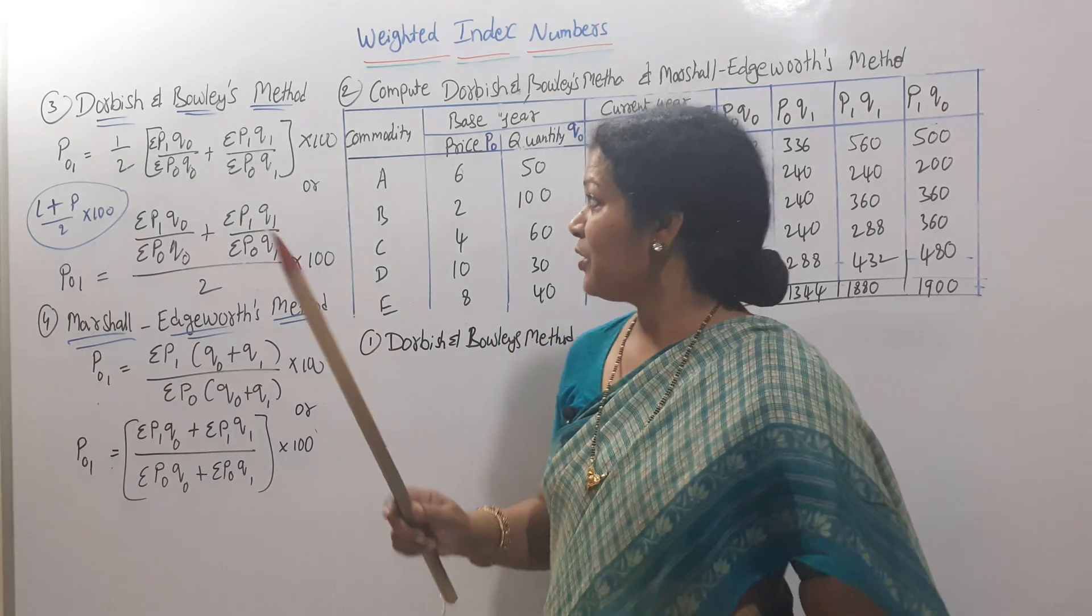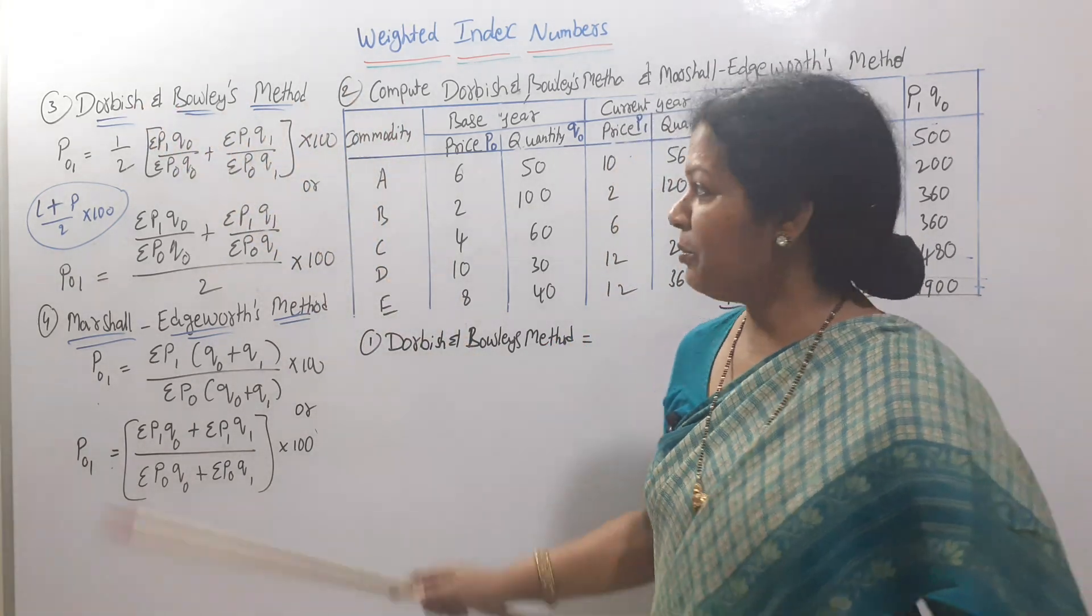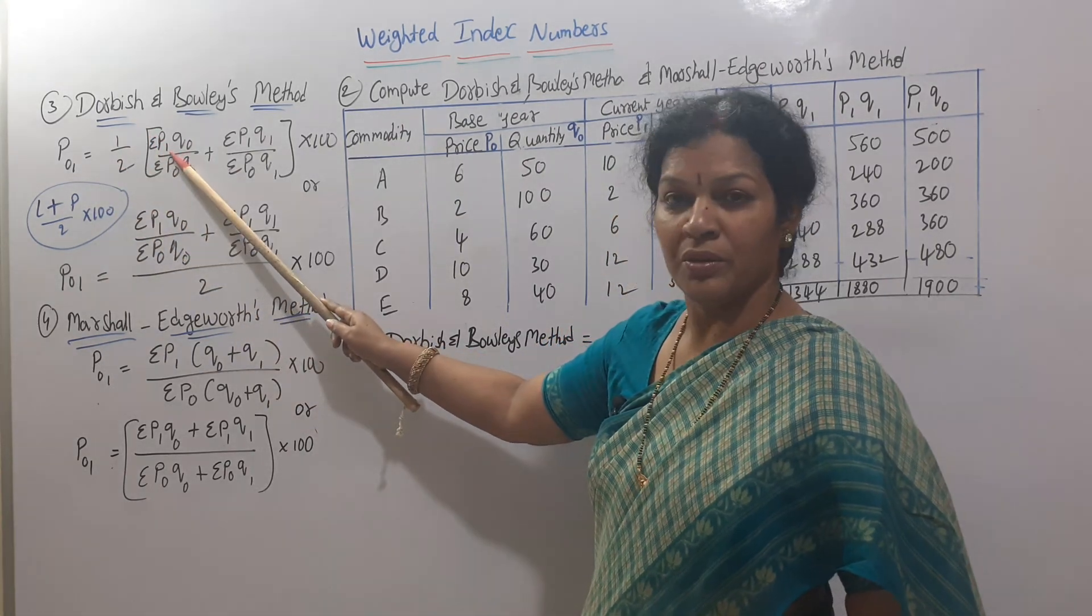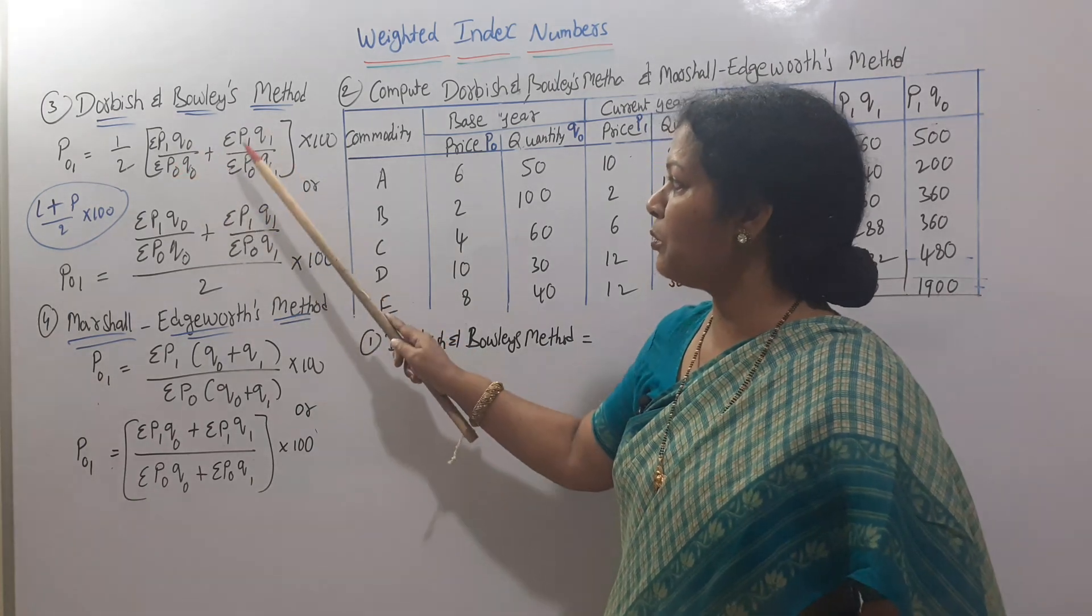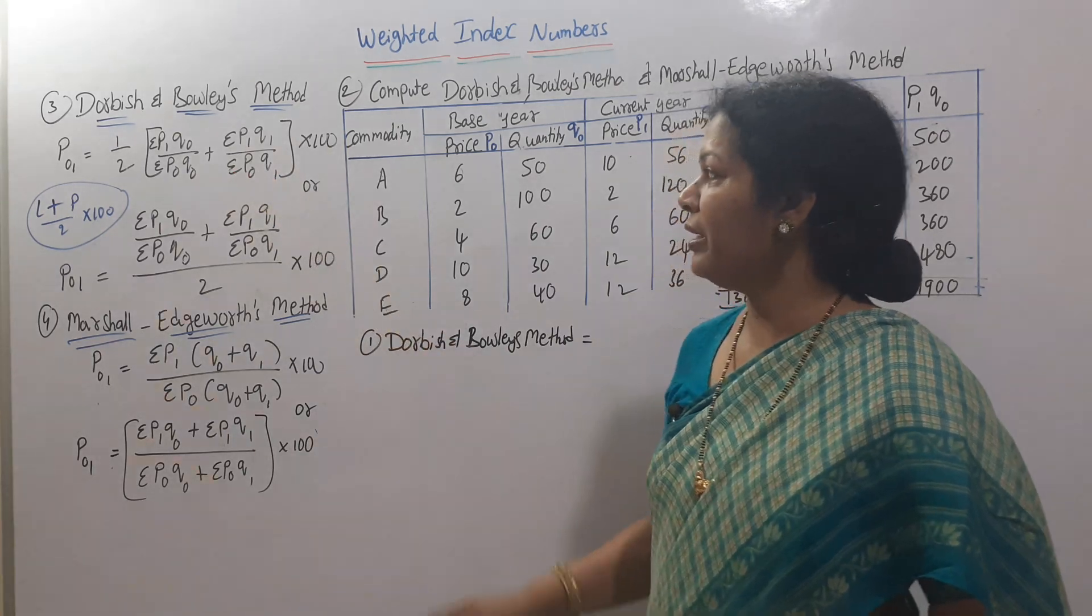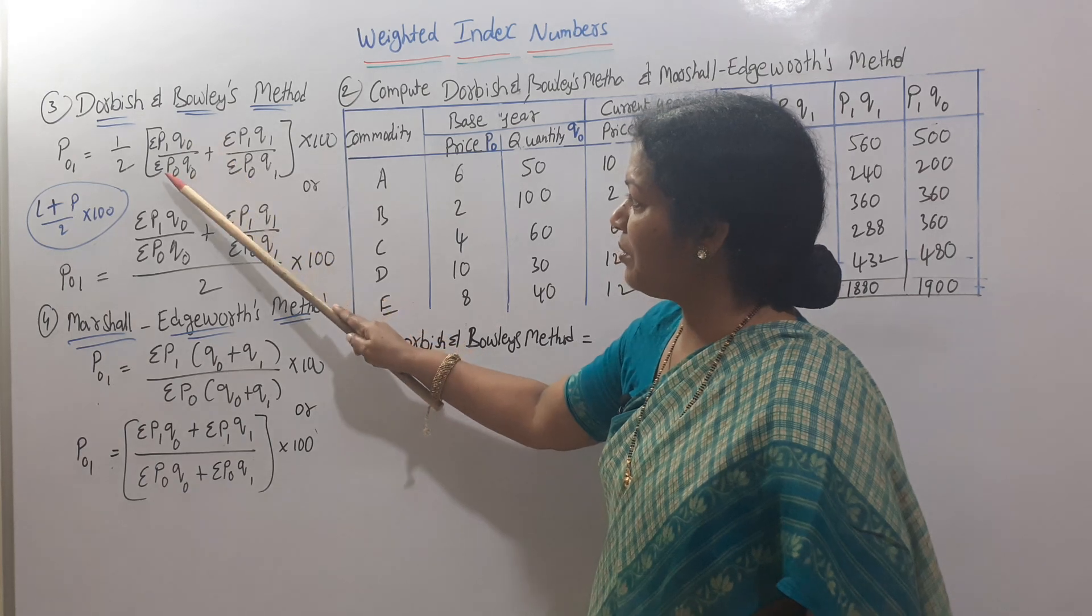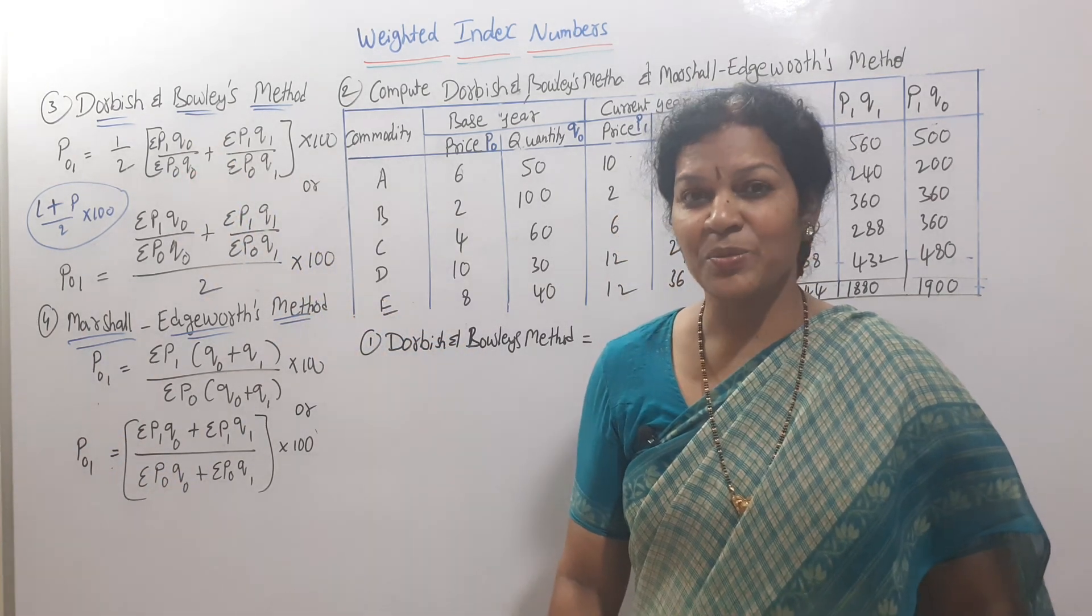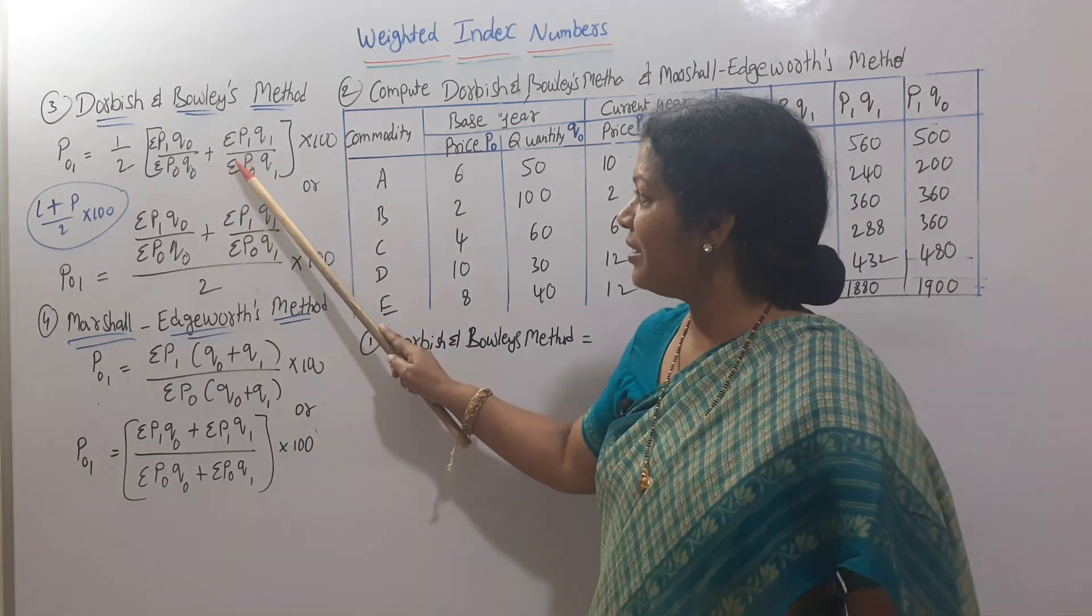First method is Dorbish and Bowley's method. P01 equals one-half times (Sigma P1Q0 / Sigma P0Q0 plus Sigma P1Q1 / Sigma P0Q1) times 100. When you see P1Q0 and P0Q0, you'll recognize this is Laspeyres. And this portion is Paasche.